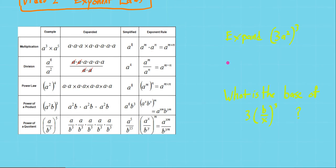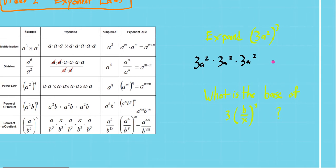we could say that that's 3a squared times 3a squared times 3a squared. Or we could say we'll take this 3 and apply it to the 3 and apply it to the a.